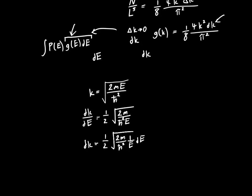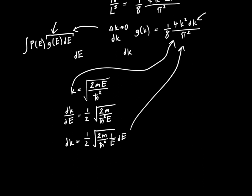And so we can plug in this value for k into our equation, this value for dk, and we will end up with... Let's see what happens. Let's see if I did everything correctly. 4 times k squared, which is 2m e over h-bar squared, times dk, which is one half 2m over h-bar squared, 1 over e. All divided by 8 times pi squared. All times dE. Now, if we factor this, do all the algebra,